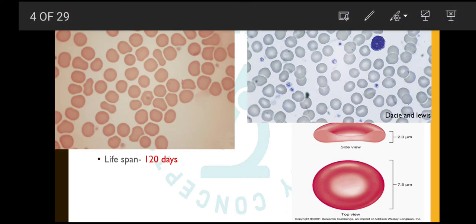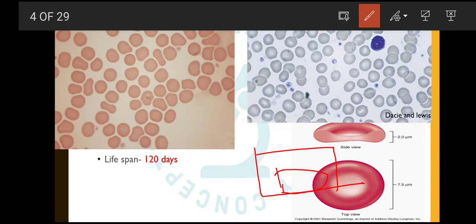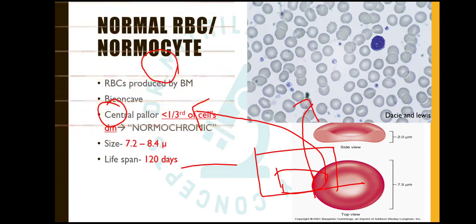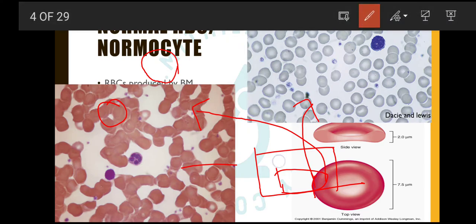When we examine a general blood picture, we should observe the correct area. The peripheral blood film is tongue-shaped. The area we examine is adjacent to the tail area, where the RBCs are just touching each other. In the tail area itself, the RBCs are far apart and their morphology is not appropriate for assessment. In the head area there is a lot of overlapping of RBCs. So we should not examine RBCs in the region of the head or tail — the ideal area to examine is the region adjacent to the tail.